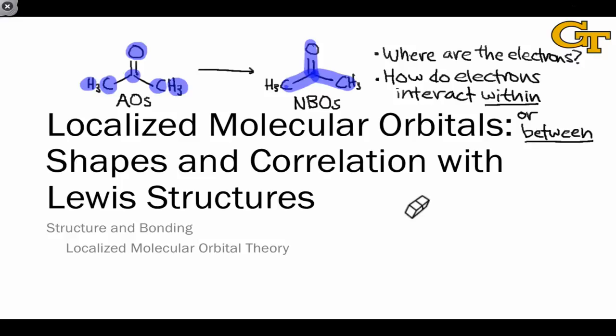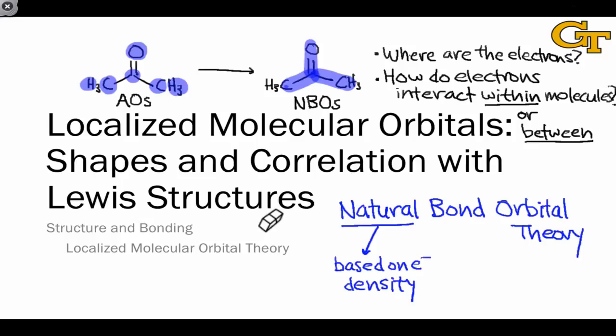They also give us great insight into how electrons interact within or between molecules. Delocalization effects due to resonance, for example, can be very clearly indicated through this approach via the overlap of adjacent NBOs. The theoretical approach we're going to take here is called natural bond orbital theory.